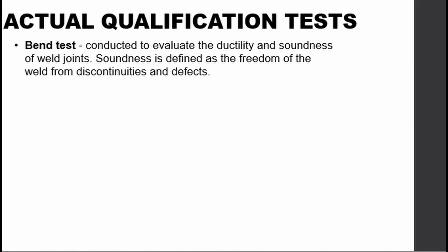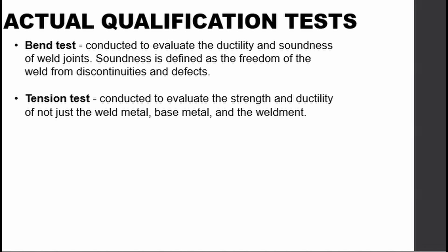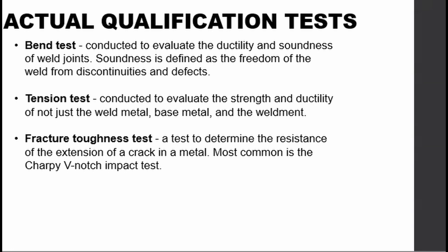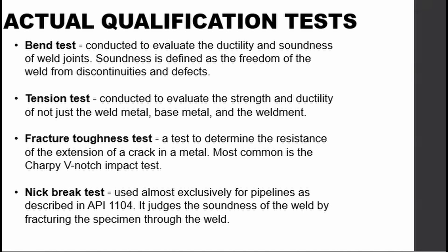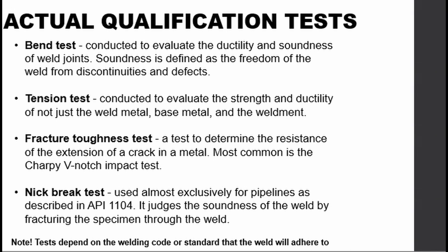Bend test: conducted to evaluate the ductility and soundness of weld joints — soundness being the freedom of the weld from discontinuities and defects. Tension test: conducted to evaluate the strength and ductility of not just the weld metal, but the base metal and the weldment. Fracture test: the impact test I mentioned for supplementary essential variables; the most common is the Charpy V-notch impact test, used to determine the resistance to crack extension in a metal. Nick break test: used almost exclusively for pipelines described in API 1104, and similar to the bend test, it judges soundness by fracturing the specimen through the weld. Note that these tests depend on the welding code or standard the weld adheres to.